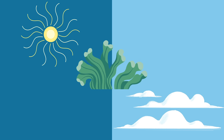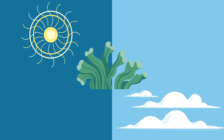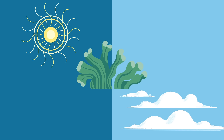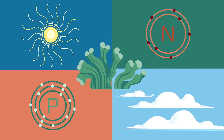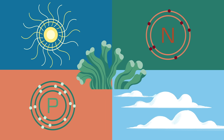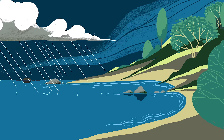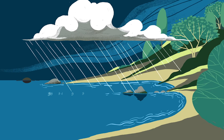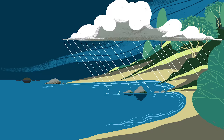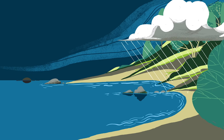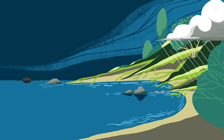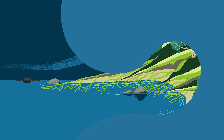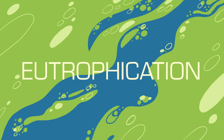Besides sunlight and CO2, algae growth also depends on nutrients like phosphorus and nitrogen. While such resources are typically in short supply, sometimes a surrounding watershed can flood coastal waters with these nutrients. For example, a large rainstorm might wash nutrient-rich sediment from a forest into a lake. These additional resources lead to a massive increase in algae growth, known as eutrophication.